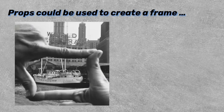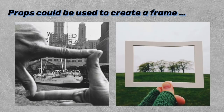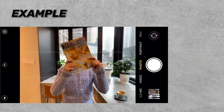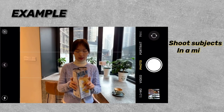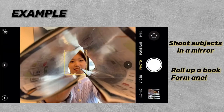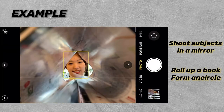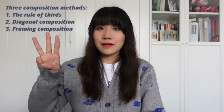Props can also be used to create a frame when the environment does not provide one. For example, shooting the subject in a mirror or rolling up a book to form a circle.